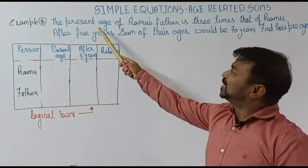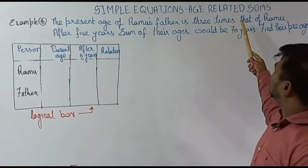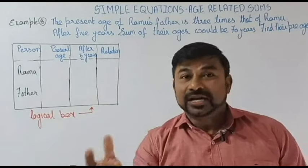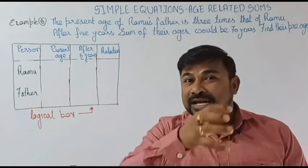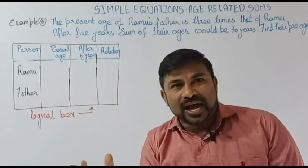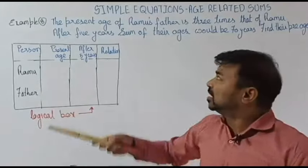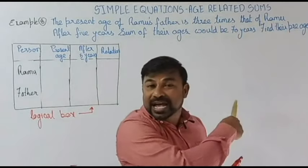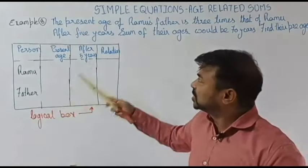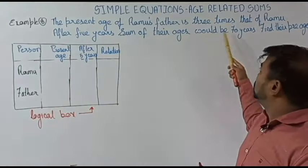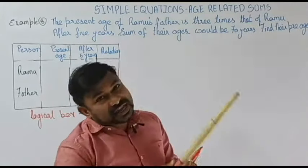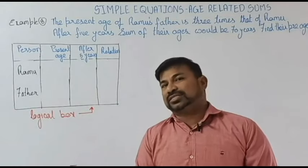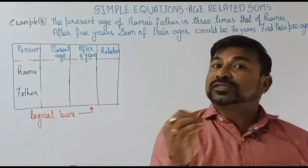Here is the question: the present age of Ramu's father is three times that of Ramu. We are comparing the age of Ramu with his dad's age. The next condition is: after five years, the sum of their ages would be 70 years. We are supposed to find their present ages.